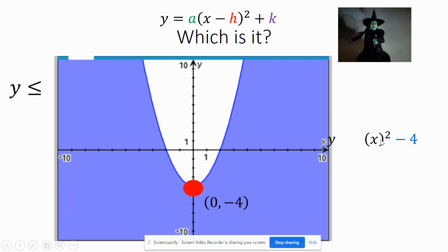And I said my vertex is at zero negative four. So that means in my horizontal shift, there would be like a minus zero, but I don't write minus zeros. It's a vertical shift down four. And because it is a less than or equal to, a solid line and we're shaded below, that's what it would look like.